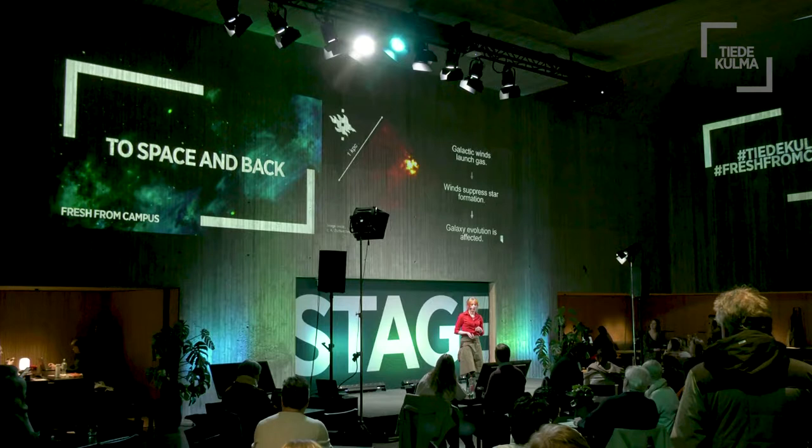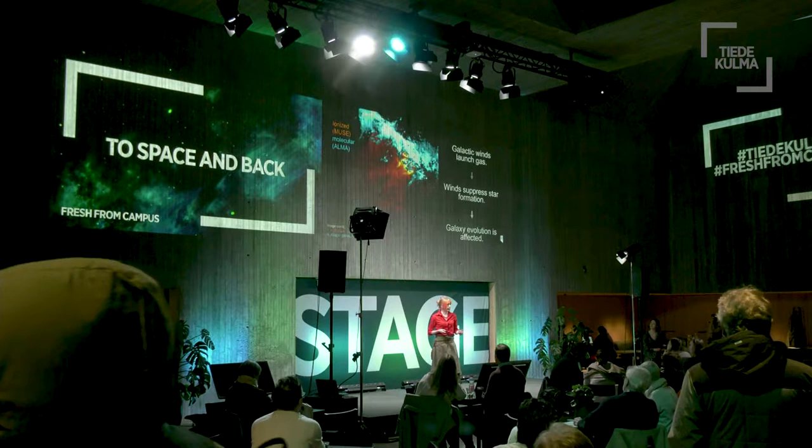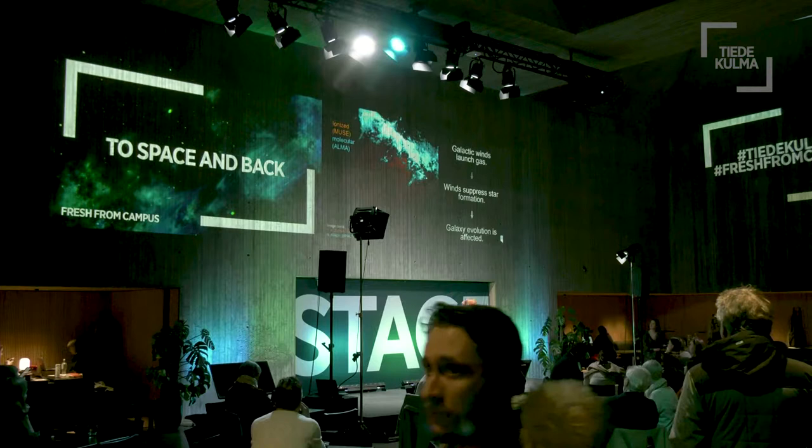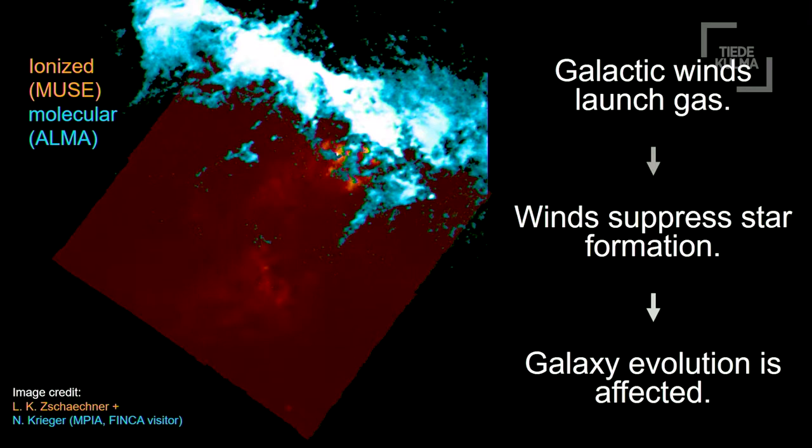This orange image shows ionized gas — very hot gas being ejected from the galaxy. But we can also observe different types of gas. This blue gas is molecular gas; it's cold, dense gas observed with the ALMA telescope. It's the same object — I've just superimposed them on each other. The blue image is provided by Nico Krieger at the Max Planck Institute for Astronomy, a collaborator of ours. If you look at these two images, they look very different, but they're really the same object — just different types of gas.